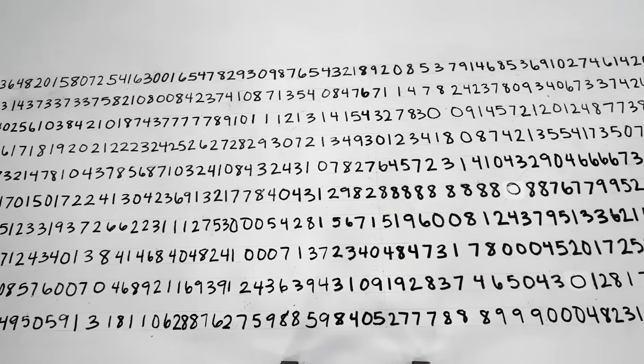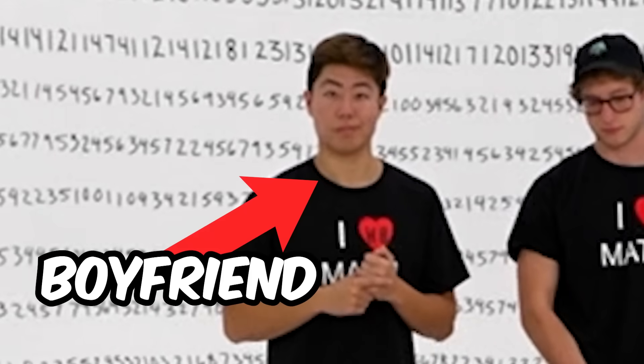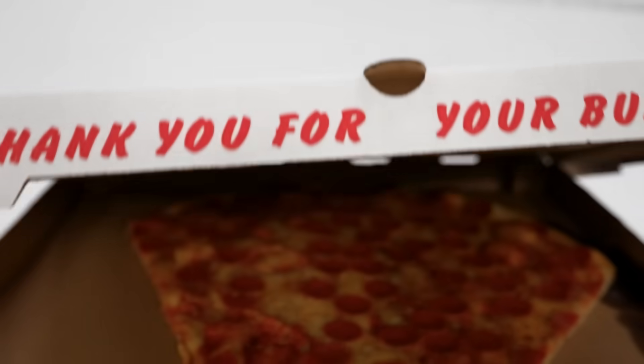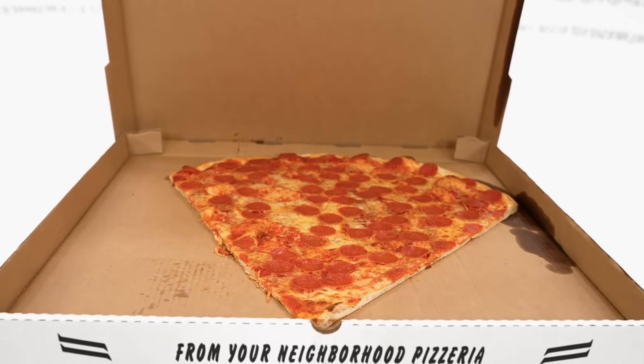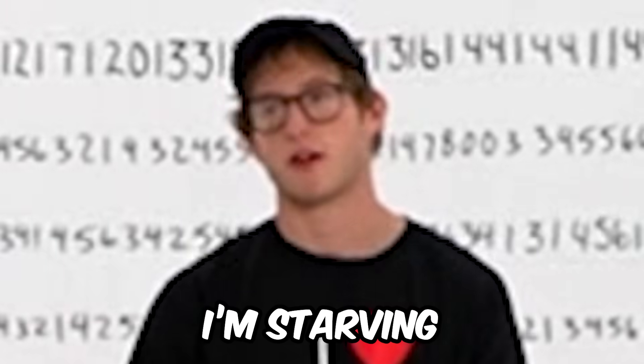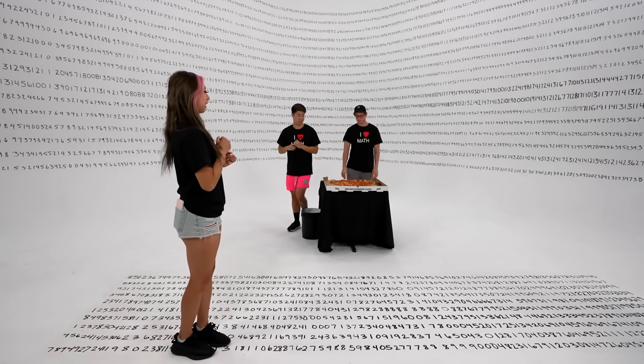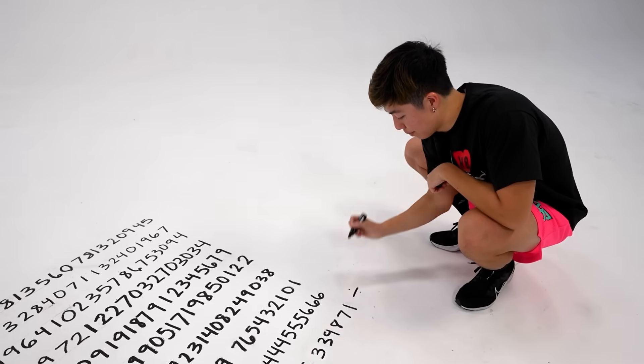On the floor is a 1,000-digit math problem, and if my boyfriend and videographer can finish that giant slice of pizza before I solve this, they win a grand. I'm starving. Okay, Zach, write a number that I can divide by. I think a tricky number would be seven.